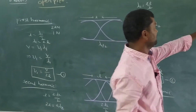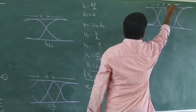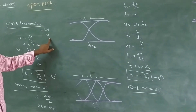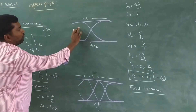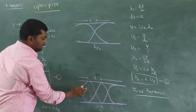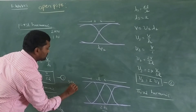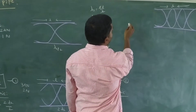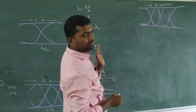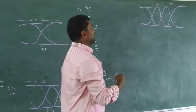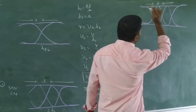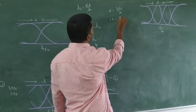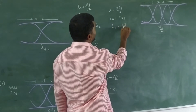For the 3rd harmonic: in the 1st case, L equals λ₁ by 2; in the 2nd case, L equals 2λ₂ by 2, forming 2 antinodes and 1 node; in the 3rd case, L is equal to 3λ₃ by 2, forming 3 antinodes and 2 nodes. From this, 2L is equal to 3λ₃, so λ₃ is equal to 2L by 3.